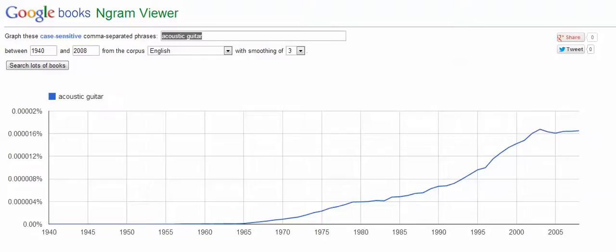Now, why that's interesting is because people have been playing acoustic guitars for a lot longer than since 1965. So the question comes up: why were they not mentioned in any books? And those of you who are perhaps a little bit more alert will work out that the reason is because we didn't have the phrase 'acoustic guitar' before 1965, because all guitars — or at least most guitars — were acoustic.